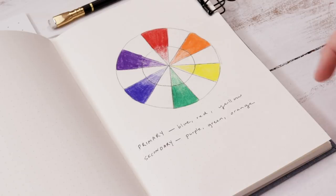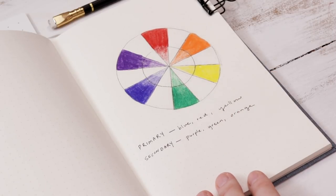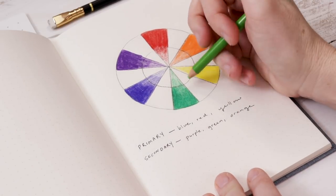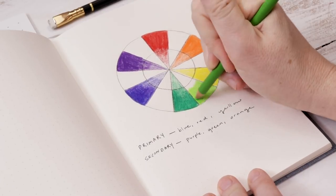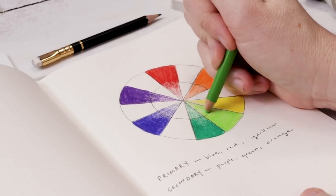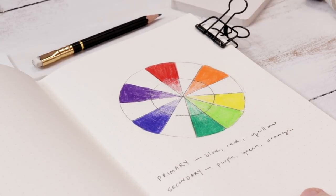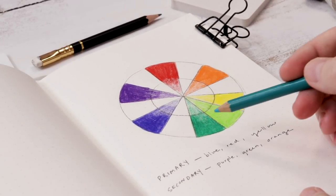We mixed red and yellow to make orange, we mixed yellow and blue to make green. Now we're going to mix yellow and green to make yellow-green or chartreuse. By mixing our primary and secondary colors together, we get the six tertiary colors.